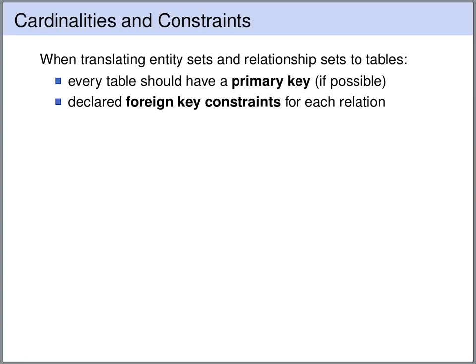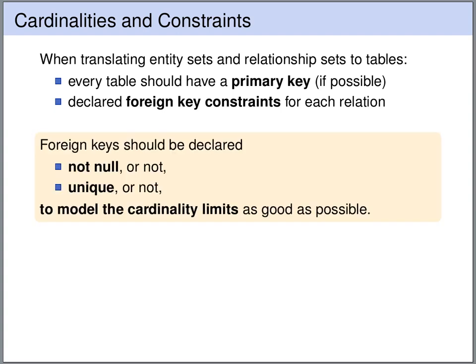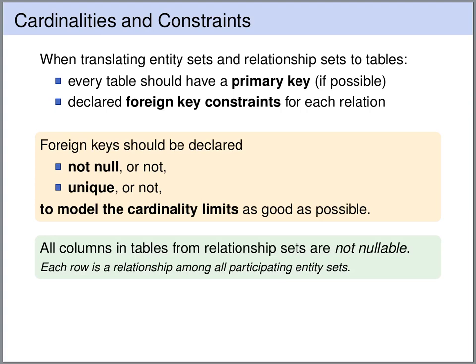First of all, when translating entity sets and relationship sets into the relational model — into tables — every table should have a primary key. For every relation we should declare the corresponding foreign key constraints. For the foreign keys we should additionally think about whether these keys can be declared as NOT NULL or UNIQUE, in order to model the cardinality limits as closely as possible. For instance, if you have a table obtained from the translation of a relationship set, then all the columns in this table are foreign keys and they can never be null, so we can declare all the columns as NOT NULL.